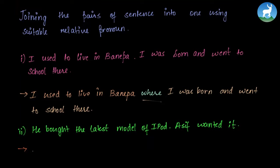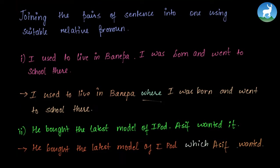'You bought the latest model of iPod. Asif wanted it.' Here we're talking about an iPod, which is a thing, so we use which. If this were an informal sentence we could also use that. 'He bought the latest model of iPod which Asif wanted.' We don't mention 'it' again in the answer because the iPod is already mentioned in the sentence.